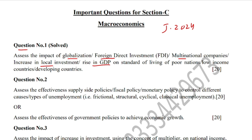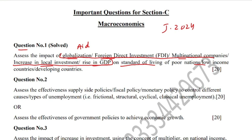The examiner will not use all of these terms together — they may pick any one, such as globalization, foreign direct investment, multinational companies, increase in local investment, or rise in GDP. The examiner sometimes also uses 'foreign aid,' for example: the impact of foreign aid on standard of living of poor nations, which are basically low-income or developing countries. It is exactly the same thing.